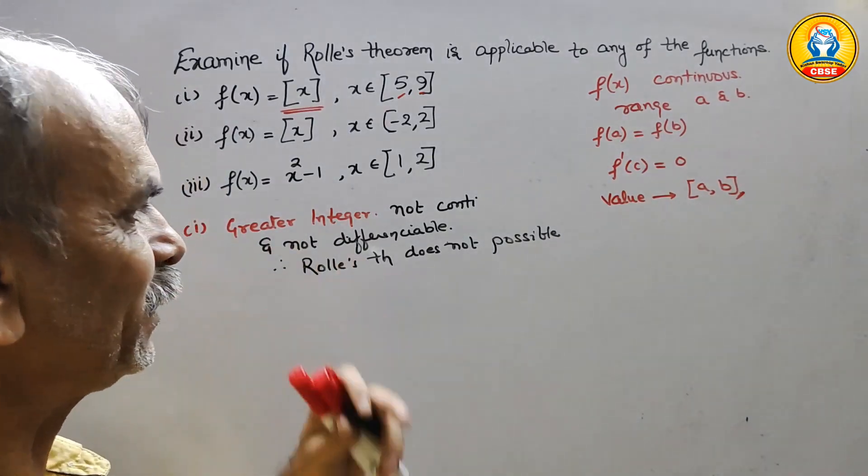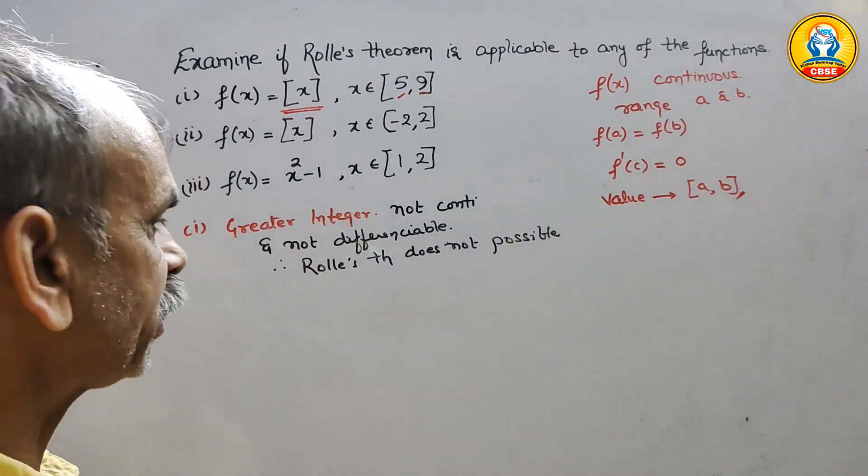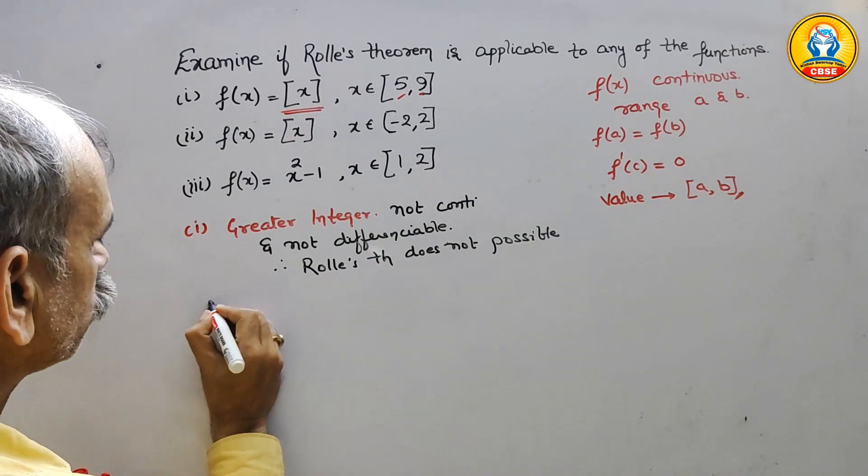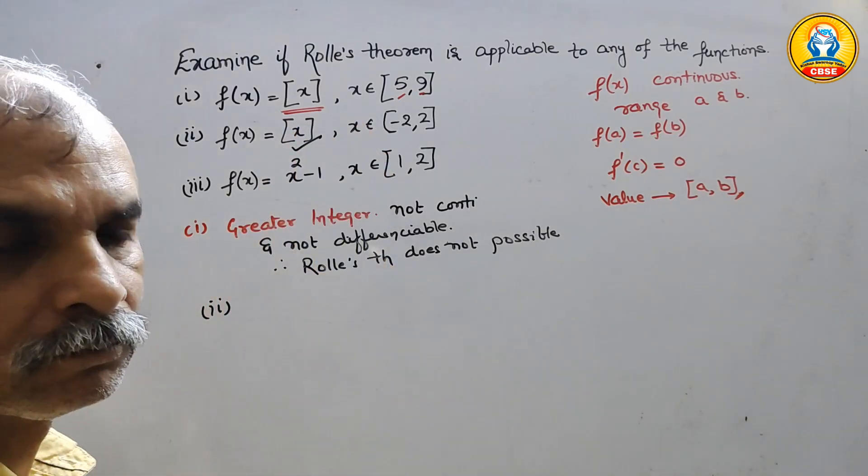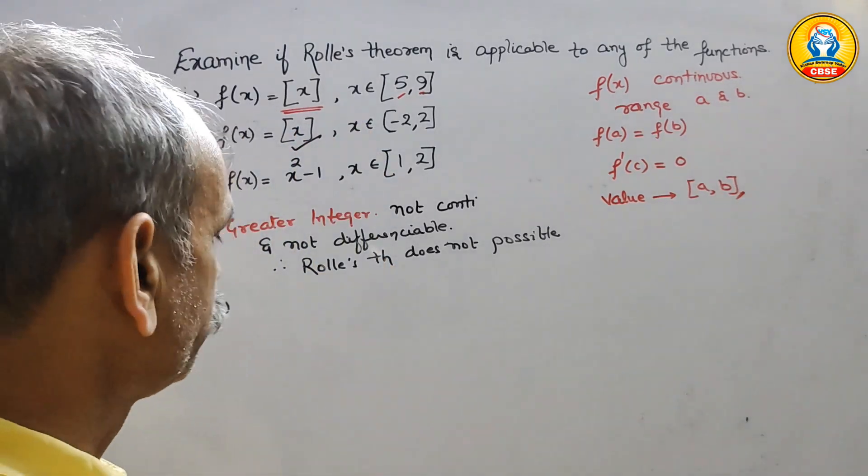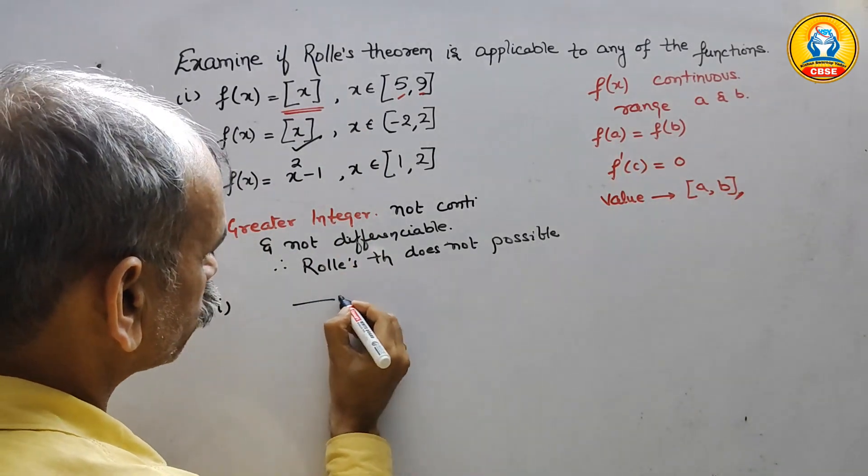In first, we have to write this. Second, we will check. Second also, they have given the same greatest integer. It is not possible. Your second answer is also the same.